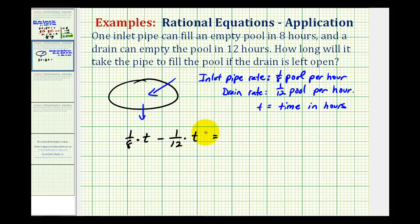And we want this to be equal to the amount of pool that we want filled, which is the entire pool, which would just be equal to one. Another way to think of this is we want one hundred percent of the pool to be filled, which as a decimal would be equal to one.